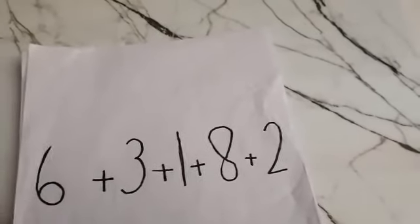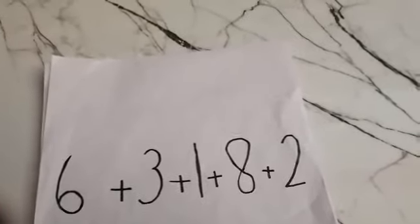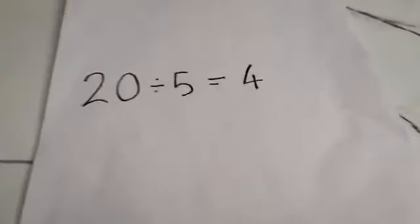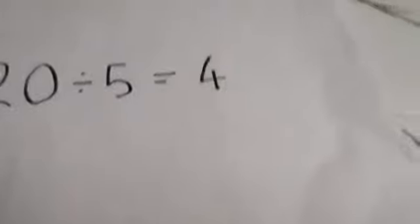For example, 6, 3, 1, 8, and 2. This equals 20, and there are 5 numbers, so 20 divided by 5 equals 4. So your answer is 4.